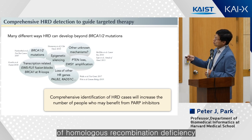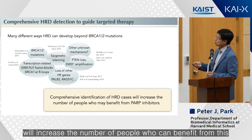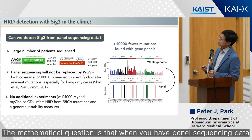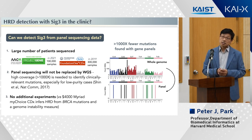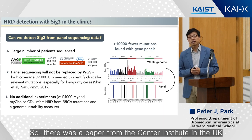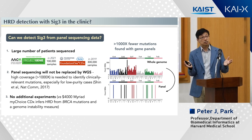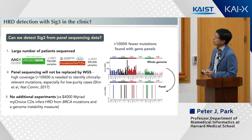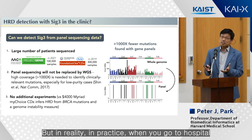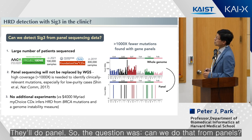Comprehensive identification of homologous recombination deficiency, which is related to PARP inhibitor eligibility, will increase the number of people who can benefit. The mathematical question is: when you have panel sequencing data, the math problem gets harder. There was a paper from the Sanger Institute in the UK that used whole genome data to identify Signature 3 cases, published in Nature Medicine. But in practice, when you go to a hospital they don't do whole genome sequencing — they do panel. So the question was: can we do this from panels?